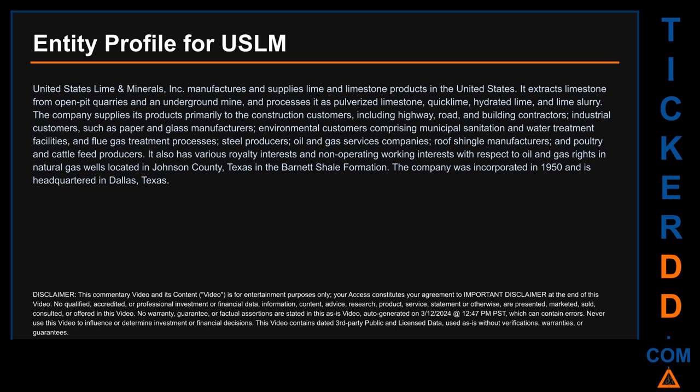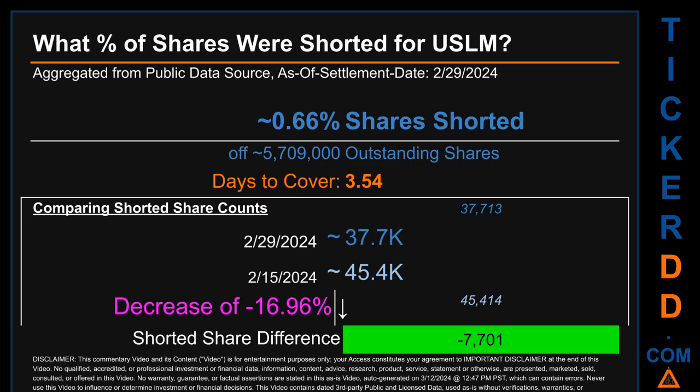What percentage of shares were shorted for USLM for the two-week period ending on settlement date February 29, 2024? About 37,700 shares of USLM were shorted out of a total of approximately 5.7 million outstanding shares. Therefore, USLM has a short interest of roughly 0.66 percent, calculated by dividing the number of shorted shares by the number of outstanding shares.